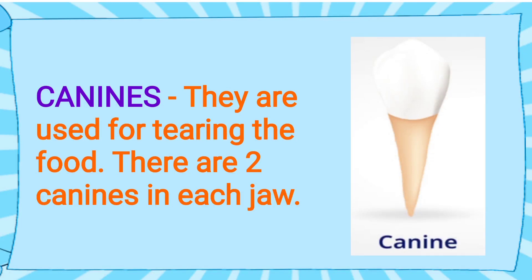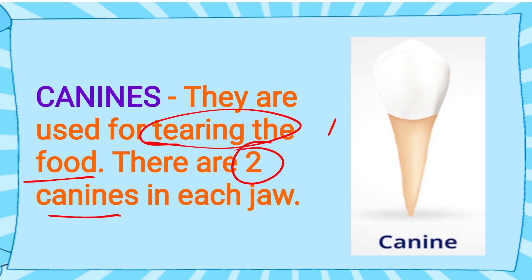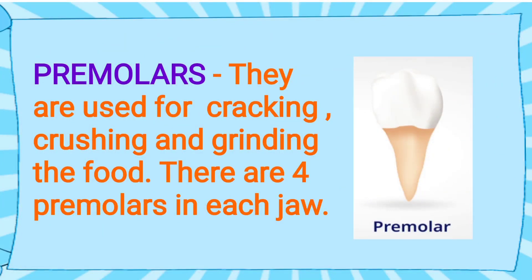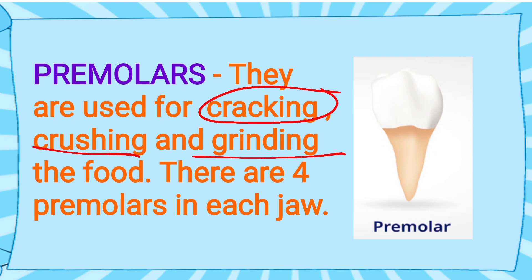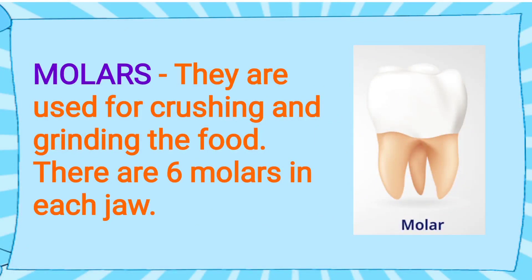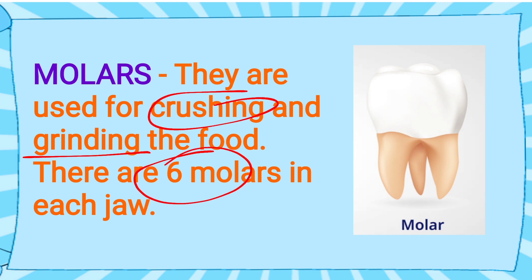Canine teeth are used for tearing the food. They are 2 in number in each jaw, so 4 in total in our mouth. Premolars are used for cracking, crushing, as well as grinding the food. They are 4 in number in each jaw, making them 8 in total. Molars are used for crushing and grinding the food. They are 6 in number in each jaw, so 12 in total in our mouth.